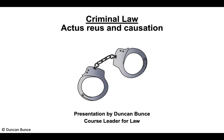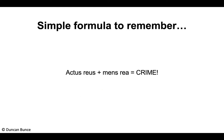Welcome to another criminal law video where we're going to look at actus reus and causation. The simple formula to remember is: actus reus (the guilty act, the physical element of the crime) plus mens rea (the guilty mind, the mental element) equals a crime. There are exceptions, such as strict liability where only the actus reus needs to be proven, but generally both elements are required.